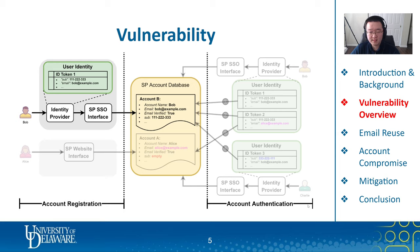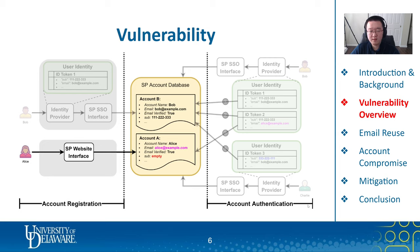In order to demonstrate the vulnerability in SSO, first we show how user accounts are registered and stored. Currently, there are two ways for user accounts to be registered. In the first case, Bob registers his account using SSO with ID token 1. In the token, it contains Bob's user ID 111222333 and email address bob@example.com, which are stored in the sub and email fields of the token. Account B is created according to the identity token, which contains the same sub and email values. In the second case, Alice registers her account through the SP's website — no single sign-on is involved. Once the account is registered, account A is stored in the SP's database with Alice's email address only. Since there's no SSO involved, the sub field of the account, which represents the user ID of the SSO identity, contains an empty value.